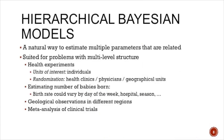Hierarchical Bayesian models are a natural way to estimate multiple related parameters, and they are naturally suited for applications where you have a hierarchical structure in the data. In health experiments, the units of interest are typically individuals — patients — and you want to know whether treatments work. But randomization is done at a higher level, such as clinics, physicians, or geographical units. These hierarchical Bayesian models are a natural fit because they allow you to fit models within each randomization unit separately, while also pooling all information together to strengthen your estimates.